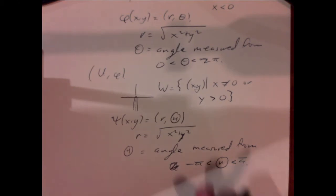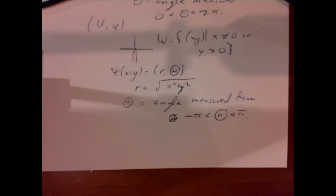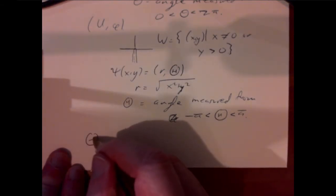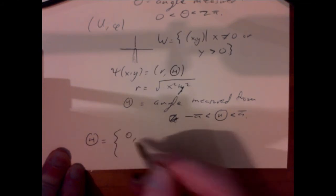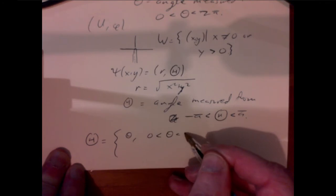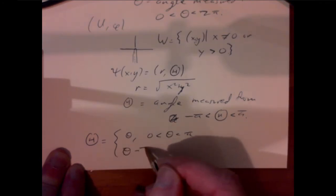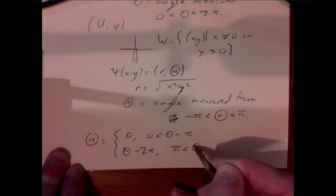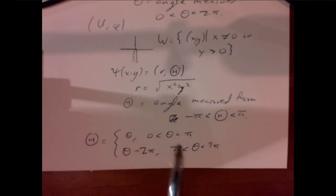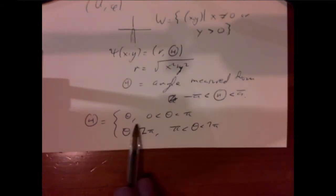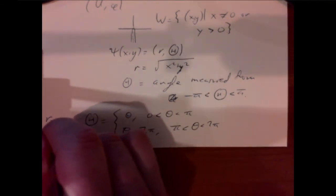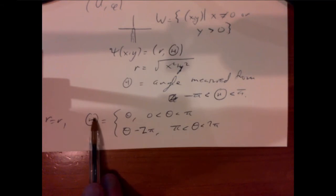You can work out the transition map between these charts. The transition map — it's already just complicated to figure out where it's defined — is expressible by an explicit formula: Theta equals theta if 0 < theta < pi, and Theta equals theta minus 2pi if pi < theta < 2pi. Those are the only two intervals lying in both U and W. So we get a transition map where r equals r, and big Theta is little theta or little theta minus 2pi depending on where you are. That's an explicit example of two charts on a set and working out the transition map between them.